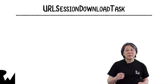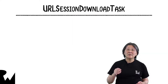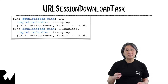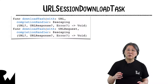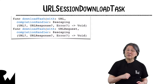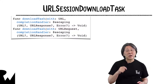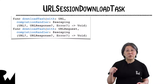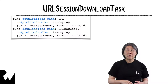A URL Session has methods to create a Download Task similar to those for Data Task. Download Tasks store the response data in a file, so a Download Task with URL or Request and completion handler gets back a URL instead of a data object. This is the location of a temporary file, so the completion handler must either read and process the data in it or copy the file to a permanent location in your app's container directory.